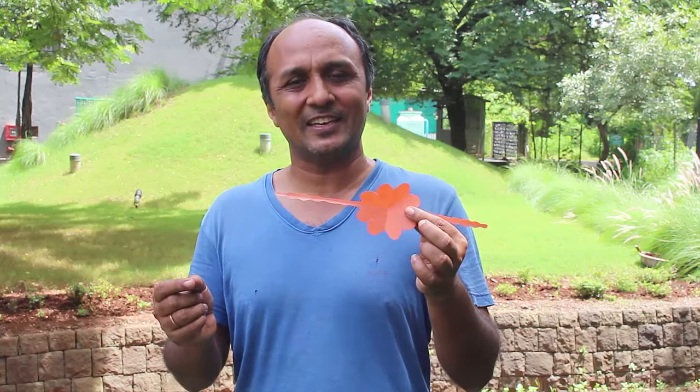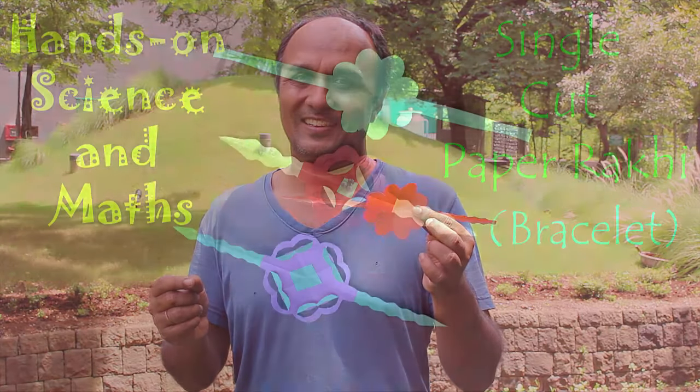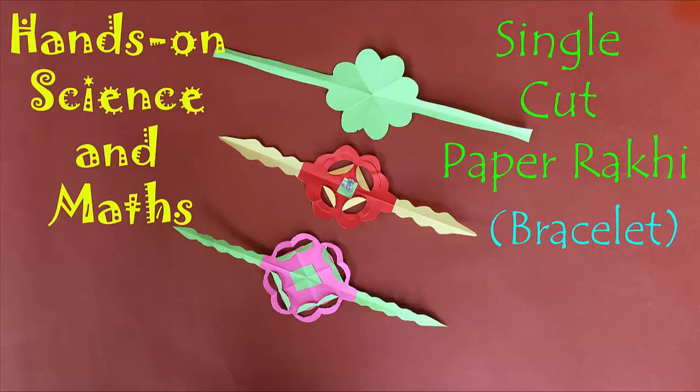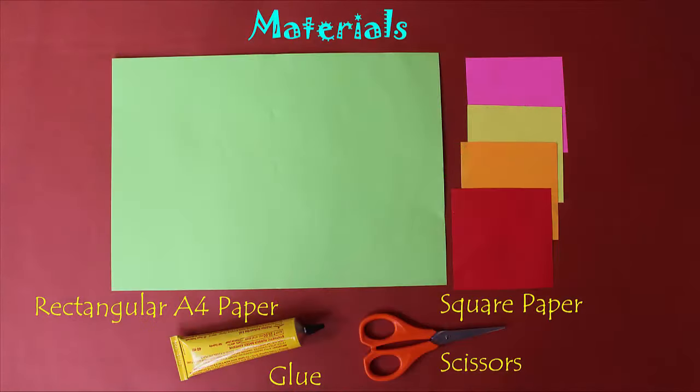On the occasion of Raksha Bandhan, today we are going to make this simple rakhi from an A4 sheet with a single cut. All you need is just a colored A4 paper and some square paper for decorations, some glue, and a scissor.